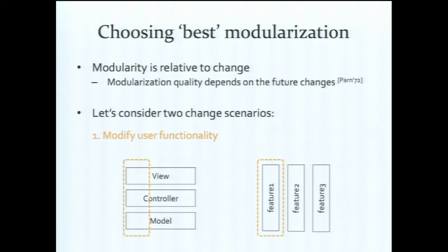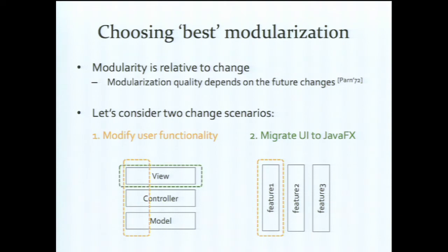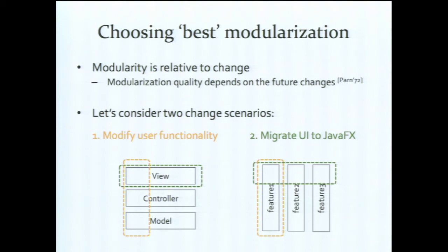In contrast, with the vertical feature-based division, this change is very well accommodated — it perfectly corresponds to one module. However, if we look at a different change scenario — migrating your UI to JavaFX — the first horizontal division is really perfect. You take the old view, throw it away, reimplement the new one, and the controller and model layers are barely affected. But with the vertical feature modules, this change becomes problematic — the change is delocalized and it's easy for changes to propagate to code that should not be affected.